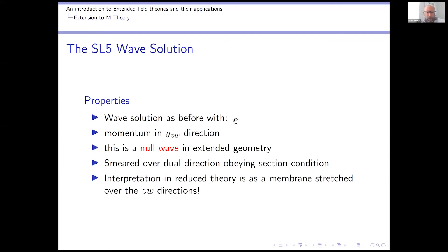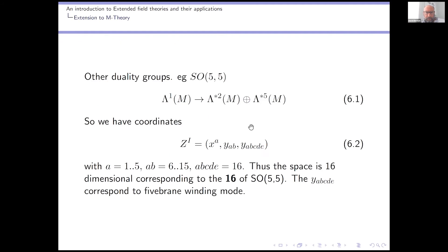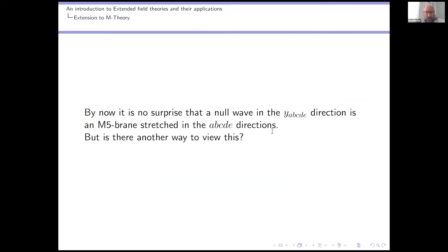We can write down solutions before, and now we have a null wave — only now it's equivalent to the membrane. We can go to other duality groups. The next one up will be SO(5,5), and the appropriate dimensional space is actually 16. X^A here will run from one to five, AB covers membrane wrappings, and there would also be a five-brane wrapping. So as we go up in dimensions, more branes can wrap in different ways, which is why we don't just double the number of dimensions — it gets quite complicated. We then introduce coordinates associated to their winding modes and associated generalized metrics.